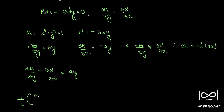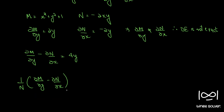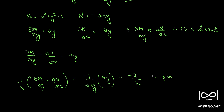So (1/N)(∂M/∂y − ∂N/∂x) equals (1/(−2xy)) times 4y, which simplifies to −2/x. This is a function of x alone, so let's call it f(x) = −2/x.